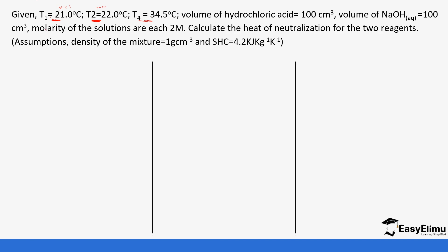To calculate the temperature change, the final temperature is 34.5°C and the initial temperature is the average of the two starting temperatures: (21 + 22) ÷ 2 = 21.5°C. So the temperature change is 34.5 − 21.5 = 13°C, or 13 Kelvin.